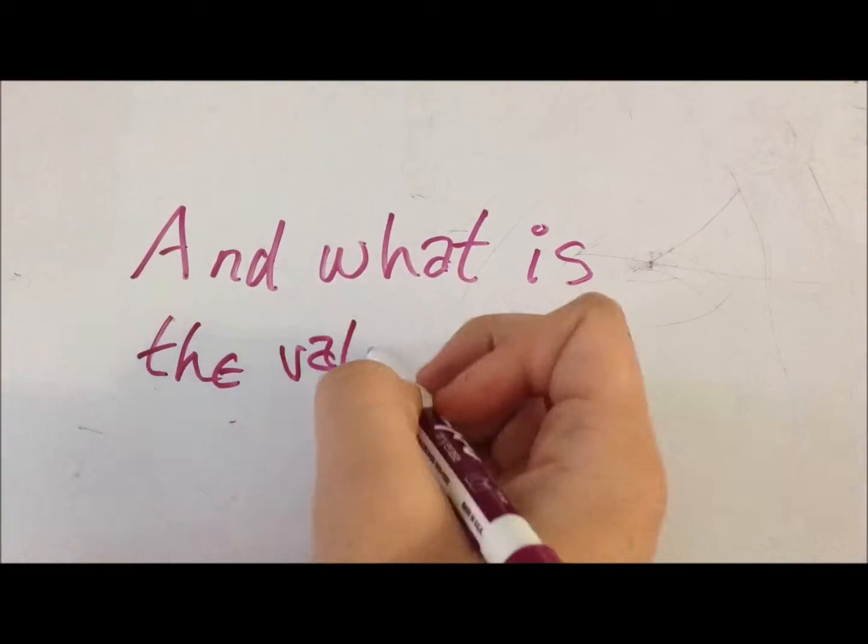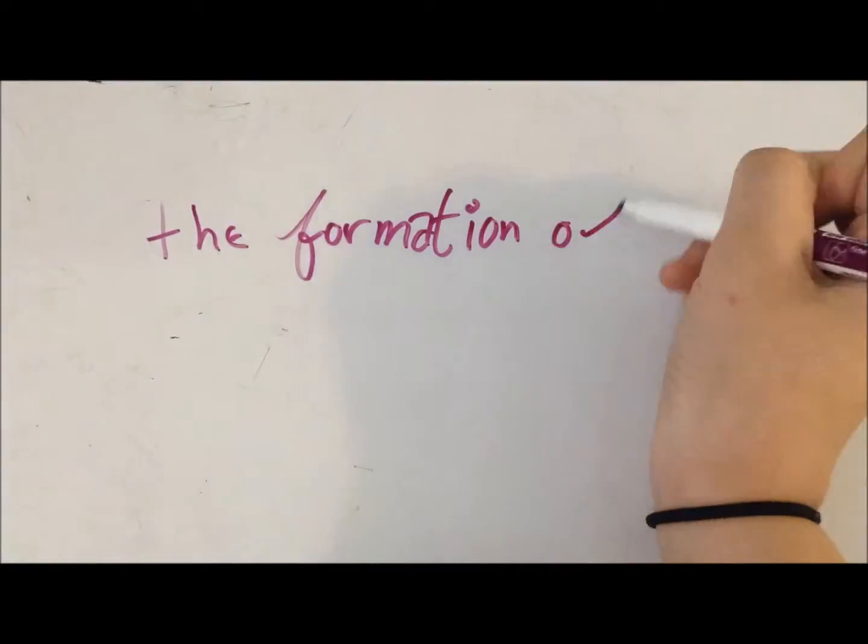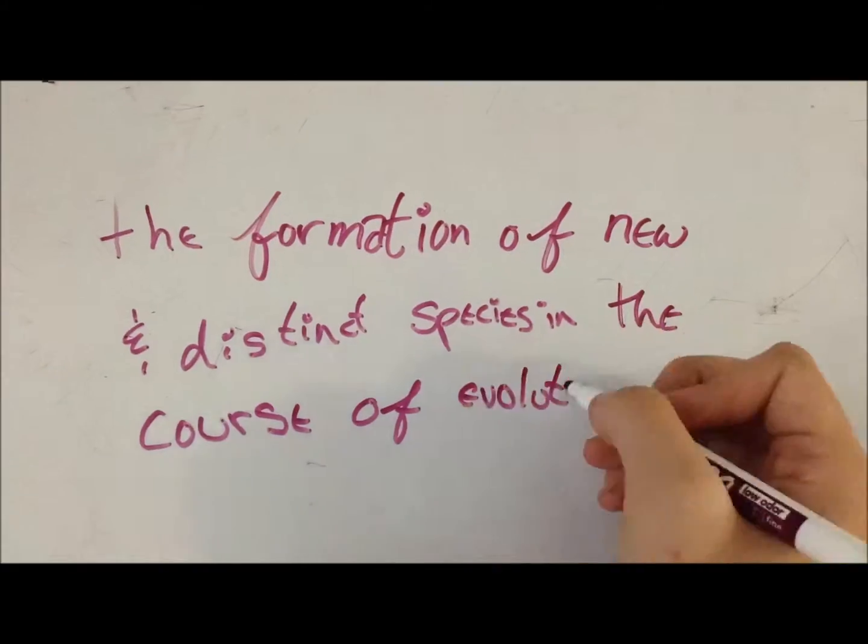What is speciation and what is the value of it? Speciation is defined as the formation of new and distinct species in the course of evolution.